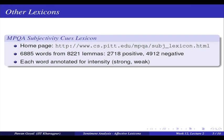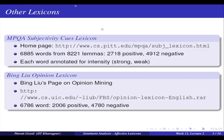Another important lexicon is the MPQA subjectivity lexicon, available for download from its website. It contains around 6885 words from 8000-plus lemmas; 2700 are positive and 4900 are negative. Each word is also labelled for its intensity — whether it is strong or weak. Then there is the opinion lexicon by Bing Liu, available from his opinion mining page, with roughly a similar number of positive and negative words. You can download these datasets and see whether they are helpful for certain tasks.